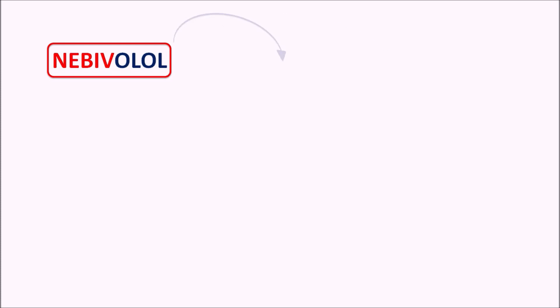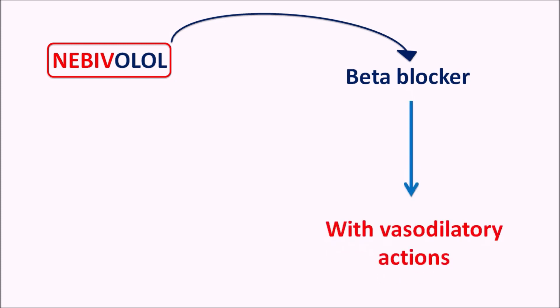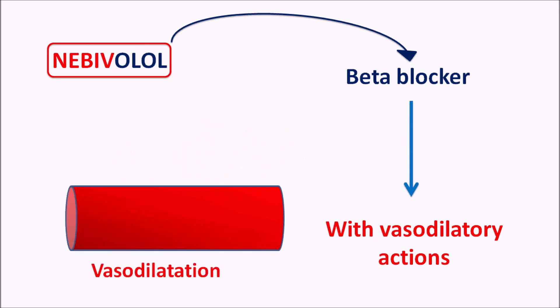Hi everyone. Today in this video we are going to discuss about nebivolol. What is this drug nebivolol? The suffix 'olol' indicates this drug is a beta blocker. But along with beta blocking activity, this drug is also having some vasodilatory action. Nebivolol is one of the drugs which can release nitric oxide, and this nitric oxide can act on the vascular smooth muscle to produce vasodilation. In this way, nebivolol is a beta blocker as well as a vasodilator.